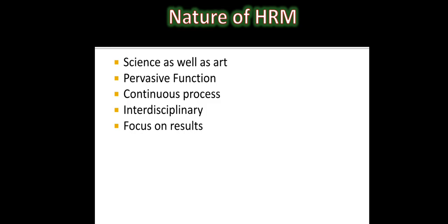Next is focus on results. HRM is performance oriented — it focuses mainly on results rather than on rules, and it encourages people to give their 100% effort. HRM has the task of motivating employees and tries to secure the best from people by winning their wholehearted cooperation. It is a process of bringing people and the organization together so that both organizational goals and the individual goals of workers are met.